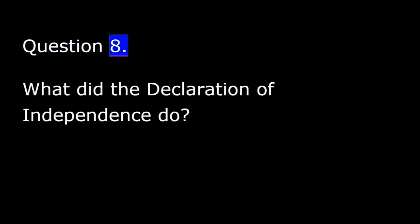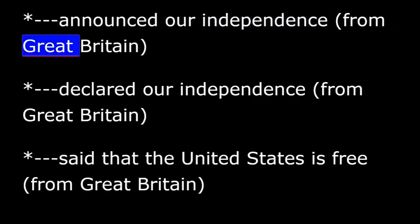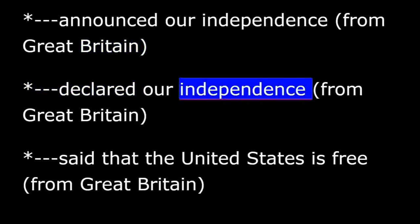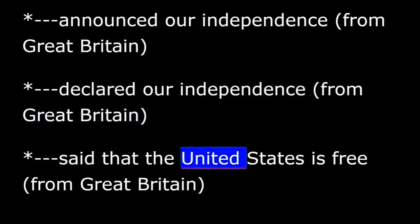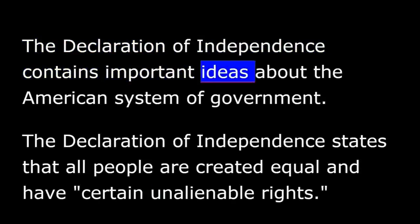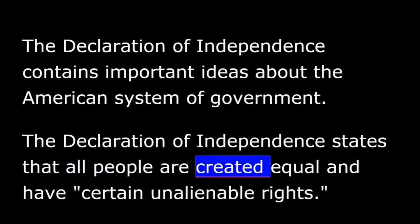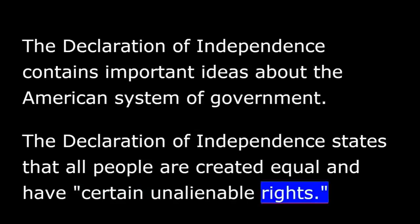Question 8. What did the Declaration of Independence do? It announced our independence from Great Britain, declared our independence from Great Britain, and said that the United States is free from Great Britain. The Declaration of Independence contains important ideas about the American system of government. It states that all people are created equal and have certain unalienable rights — rights that no government can change or take away.